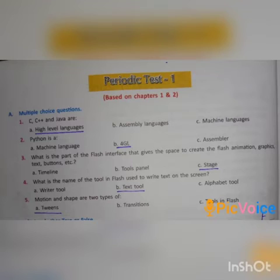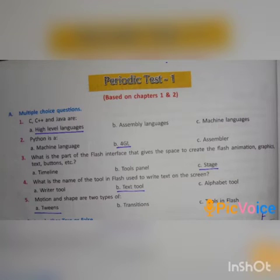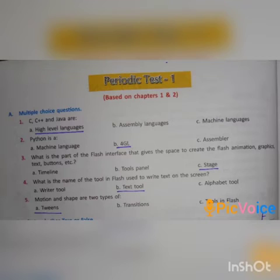Listen carefully, first I read the book exercise. Multiple choice questions. First one: C++ and Java are — option A: high level languages, option B: assembly languages, option C: machine languages. Answer: option A, high level languages. Second one: Python is — option A: machine language, option B: 4GL, option C: assembler. Answer: option B, 4GL.